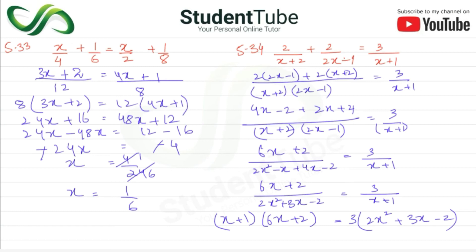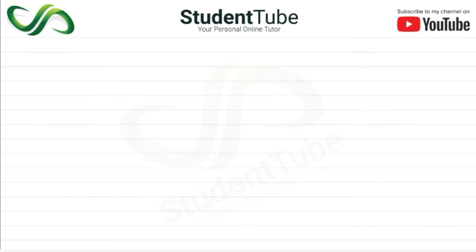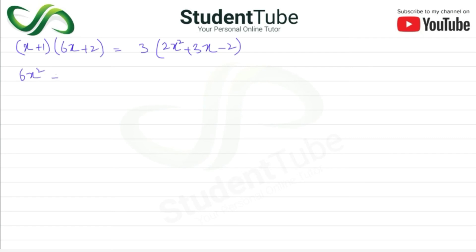Expanding left side: (x+1)(6x+4) = 6x² + 4x + 6x + 4 = 6x² + 10x + 4. Right side: 3×(2x² + 3x − 2) = 6x² + 9x − 6.